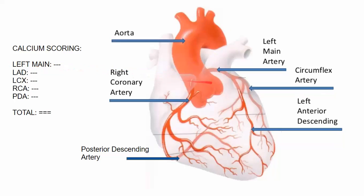A big branch of the left main is called the left anterior descending, referred to in the CAC calcium report as the LAD. This is another big artery — it supplies blood mainly to the big portion, the main portion of your left ventricle, which is a really important part of the heart that pumps blood. This is the workhorse part of your heart.